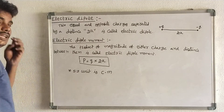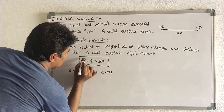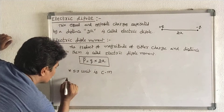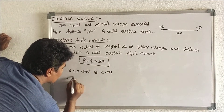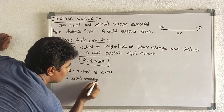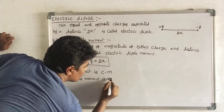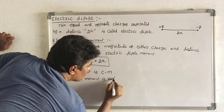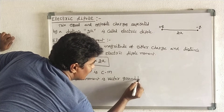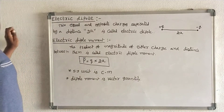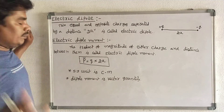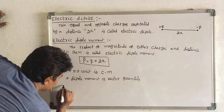Dipole moment is a vector quantity, so it is represented by P-bar. Since it is a vector quantity, it has a direction.